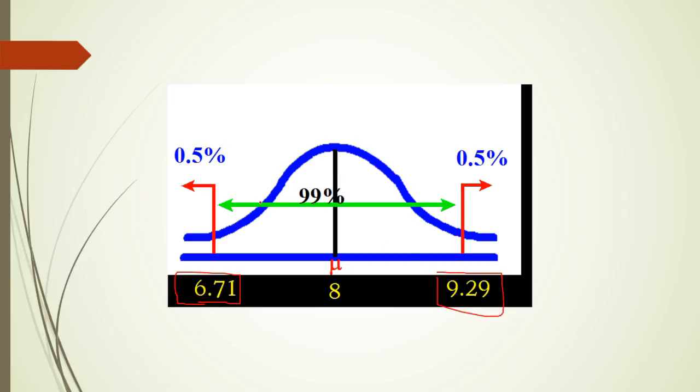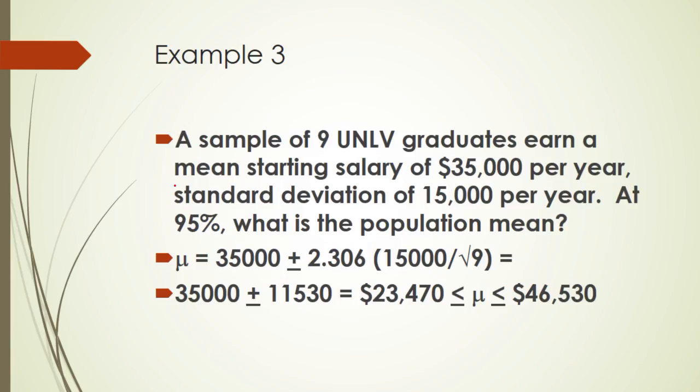So the mean is somewhere between 6.71 and 9.29. We're going to have a confidence interval here, 2 tails. This is 1% - we take half of it, a half a percent here and a half a percent here. That's the errors, the possibility of error. We're 99% sure that the right answer is between 6.71 and 9.29. There's a half a percent chance it's higher than that and a half a percent chance it's lower.